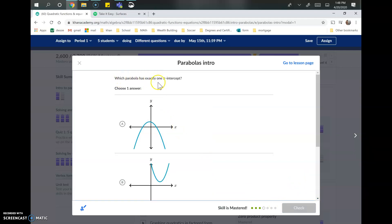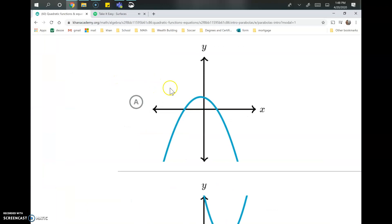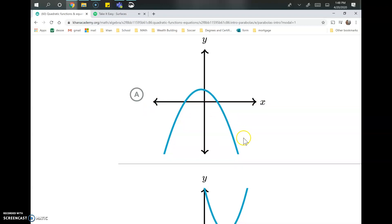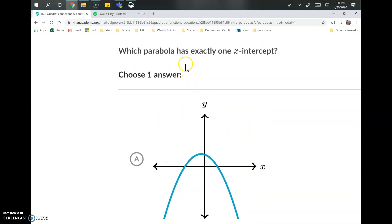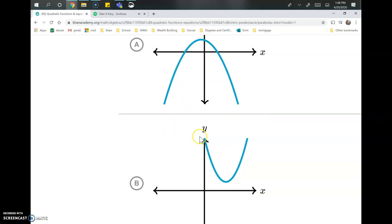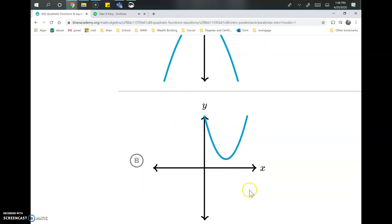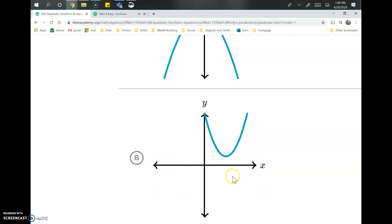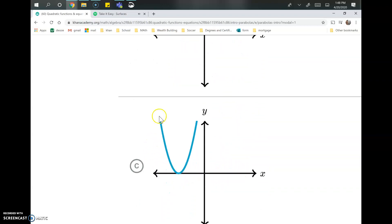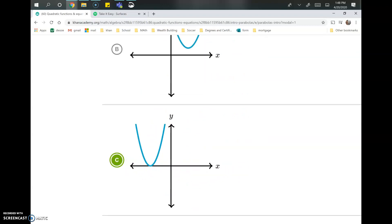Here it says which parabola has exactly one x-intercept. We're looking for how many times the blue line crosses the x-axis. This one has one and two, so we're looking for where it has exactly one. This parabola right here has none, it never crosses the x-axis, so it has zero x-intercepts. This third one comes down and touches once and then goes straight back up, so this will be the one that we select.